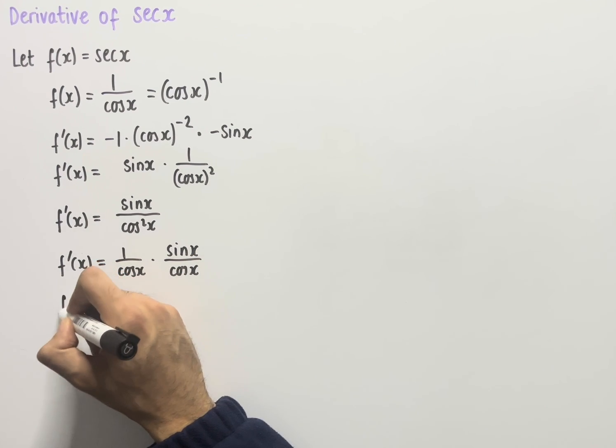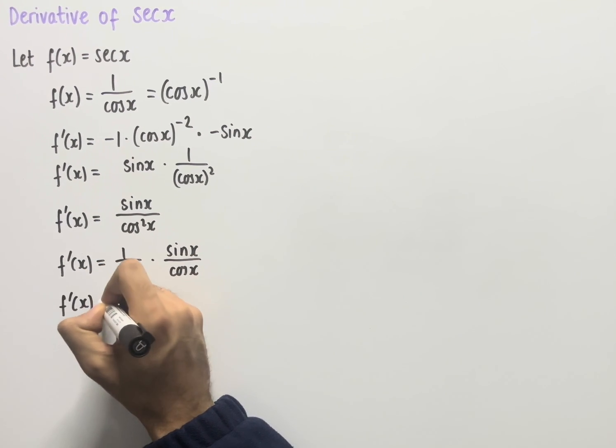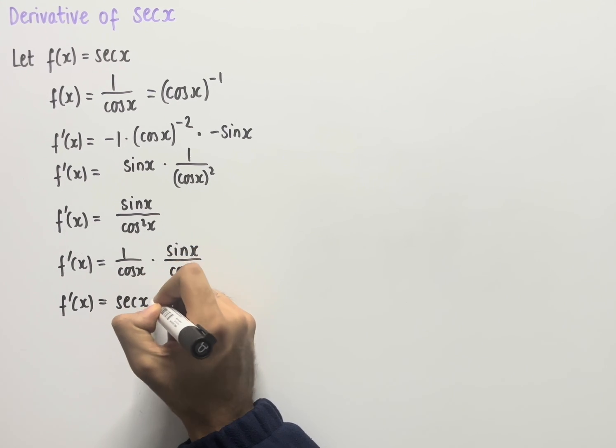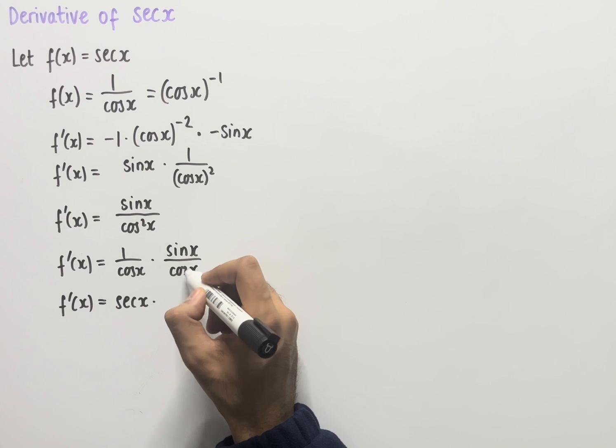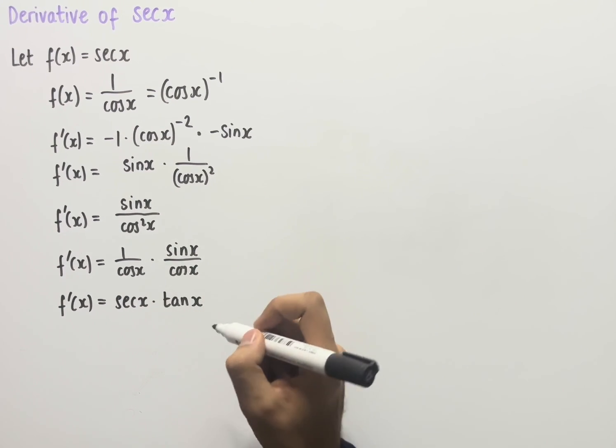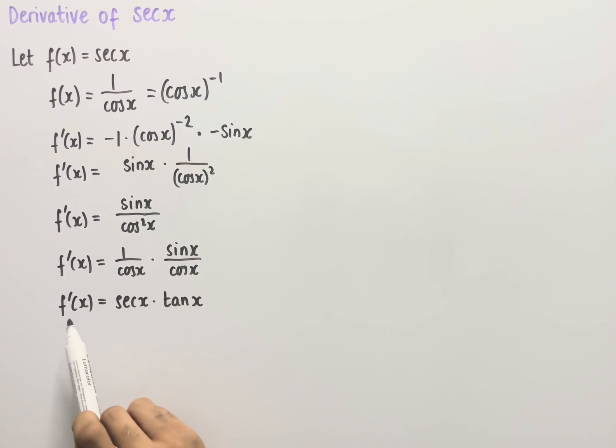If we rewrite this, we have f'(x) which equals—so 1 over cos x is equal to sec x—and then we're multiplying all of this by sin x over cos x, which is the same as tan x. So the derivative of sec x is equal to sec x times tan x.